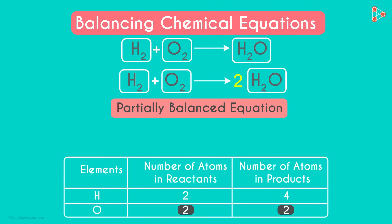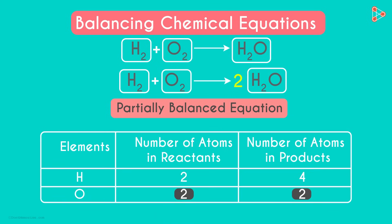Let's go back to the partially balanced equation. The number of oxygen atoms on each side is balanced now. But what about hydrogen? When we multiply this compound with 2, what happened? The number of oxygen atoms were equal on each side. But what about hydrogen atoms?